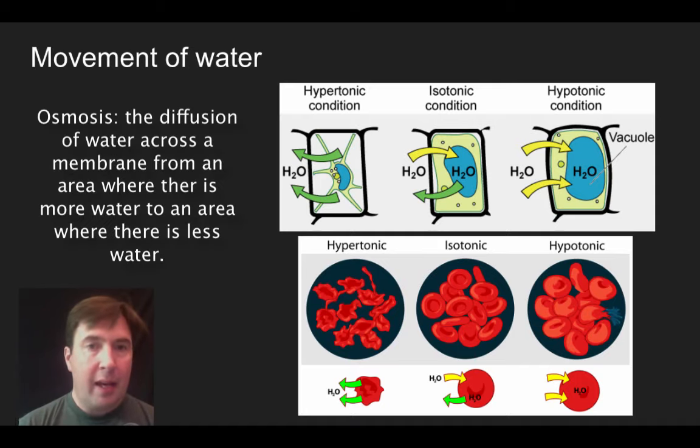Now if what we have is we have more water on one side of a membrane and less water on the other, the water is going to move from the area of high concentration to low concentration. The movement of water is specifically referred to as osmosis.